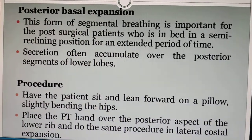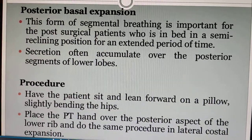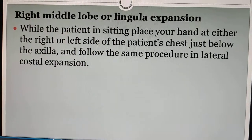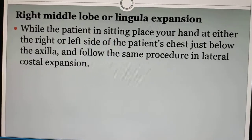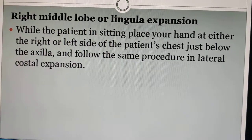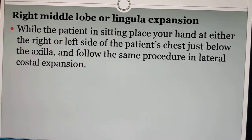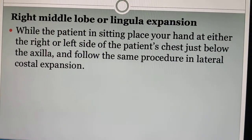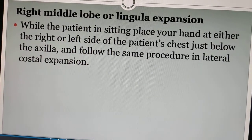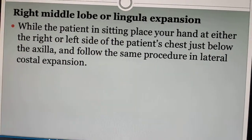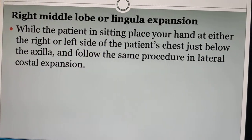For right middle lobe or lingual expansion: with the patient sitting, place your hand on either the right or left side of the patient's chest, just below the axilla, and follow the same procedure as lateral costal expansion.